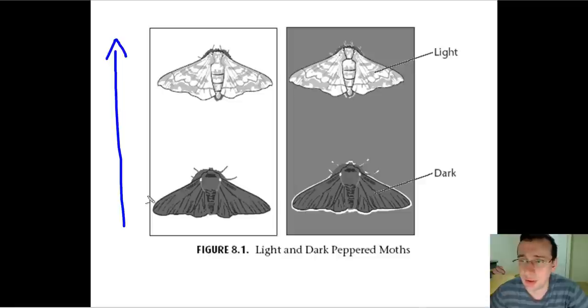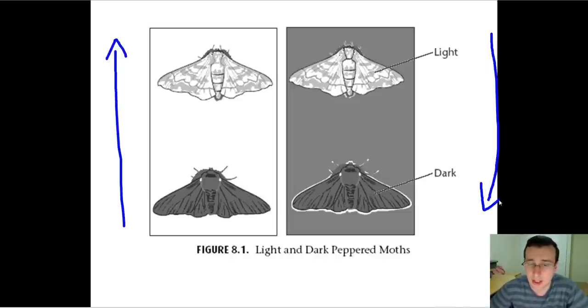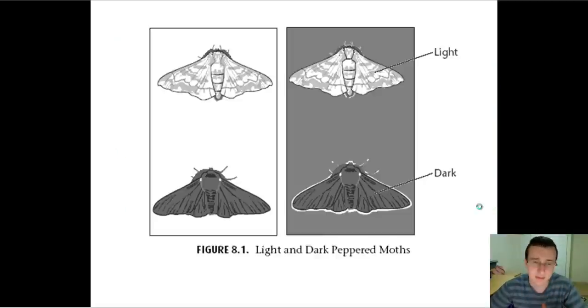But after the Industrial Revolution, those same forests that used to be covered with white or lighter materials became covered with dark charcoal or dust from factories. Then being light was disadvantageous because it was easy to be spotted, and the darker moth would be camouflaged against the dark material and hard to spot. Therefore, suddenly the population shifted towards the dark. This change in population densities is exactly what we called evolution, specifically microevolution, or changes in the frequency of genes in the population because of changes in environmental pressure. That is evolution happening.